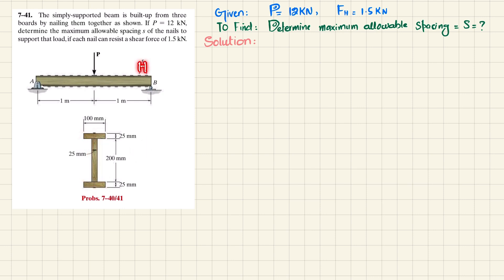We have to find the maximum allowable spacing between these nails. Shear flow is equal to horizontal shear force per unit length, which relates to the spacing. The horizontal shear force resisted by the nail is 1.5 kilonewton. From here we know that s is equal to Fh over q.